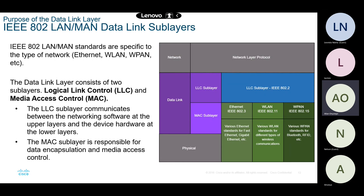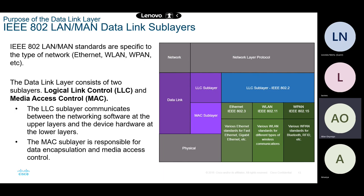The data link layer is divided into two sub-layers. The first is the Logical Link Control sub-layer — LLC — and the lower one is called the MAC sub-layer, or Media Access Control sub-layer. That is where the MAC address gets its name. MAC is always written in capital letters because it is short for Media Access Control.